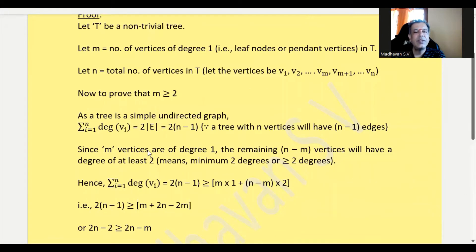Since m vertices are of degree 1, the remaining (n - m) vertices will have a degree of at least 2, meaning minimum 2 degrees or ≥ 2 degrees.